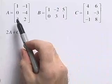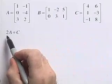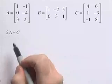For this problem, we're going to perform an operation on matrices. Here we're given three matrices A, B, and C, and we're asked to find the sum of 2A and C.